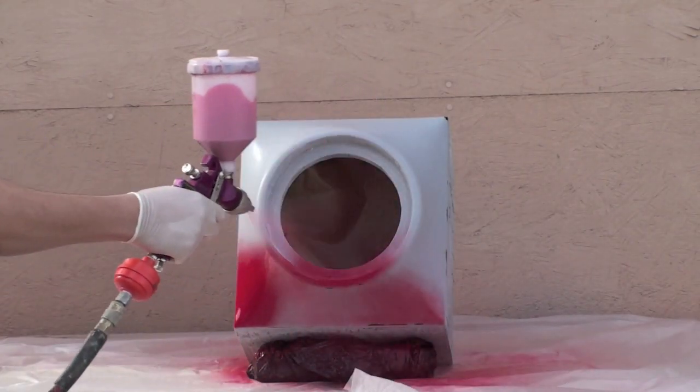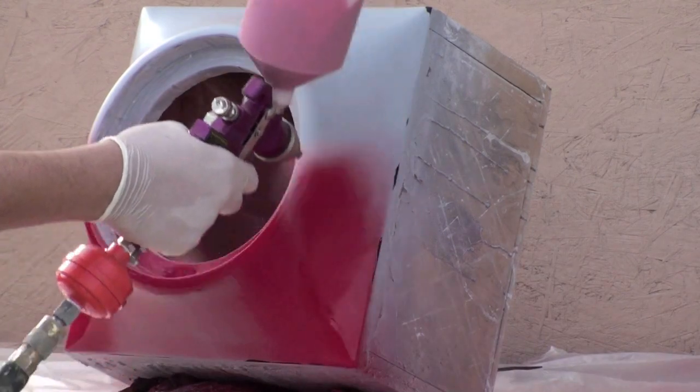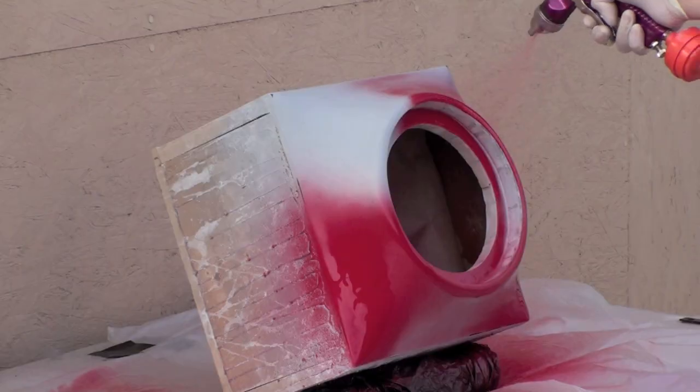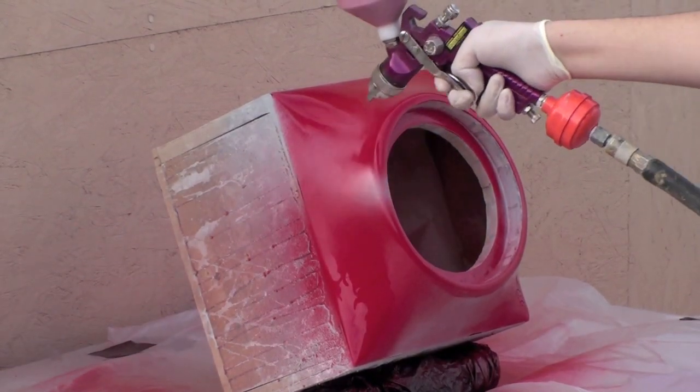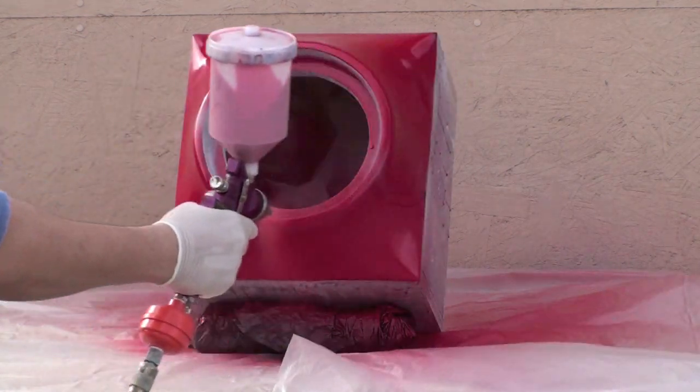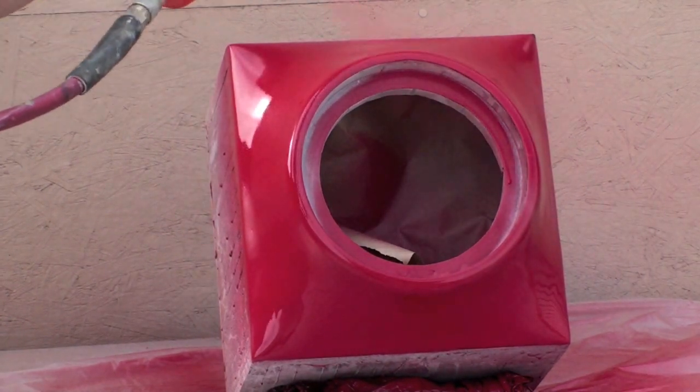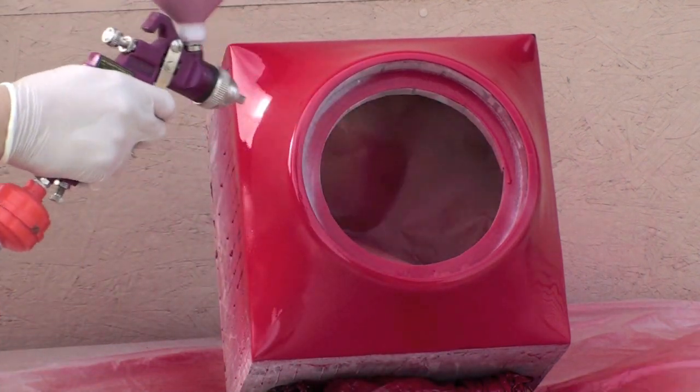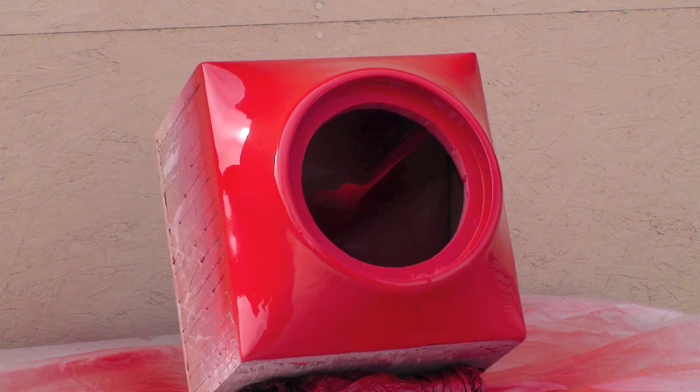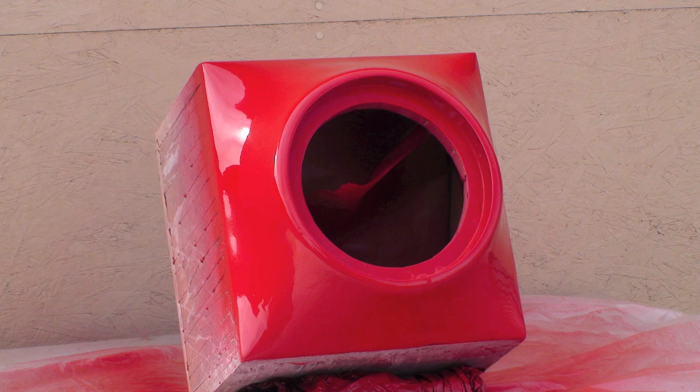Begin spraying the paint using smooth passes. Don't spray too slow or the paint will run. Let the paint flash between coats and often inspect the surface for any spots that you might have missed. Always be patient when spraying paint. Remember, you have plenty of time to work with it. Now let the paint cure for several minutes before adding clear coat.